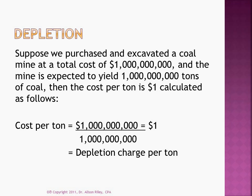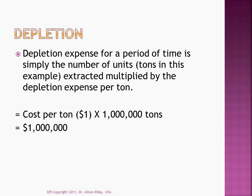Let's look at an example. Suppose we purchased and prepared a coal mine for mining at a total cost of $1 billion, and the mine is expected to yield 1 billion tonnes of coal. The cost per tonne of coal extracted is $1, calculated as $1 billion divided by 1 billion tonnes of expected output. This yields our depletion charge of $1 per tonne extracted. Depletion expense for any particular period is simply the number of tonnes extracted multiplied by the depletion expense per tonne. Suppose in 2011 we extract 1 million tonnes of coal — then our depletion expense for 2011 will be $1 million.